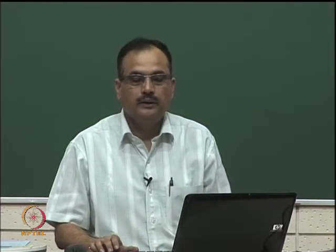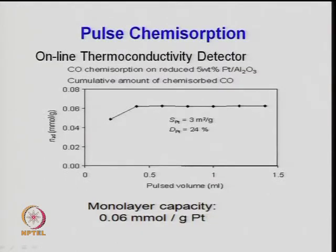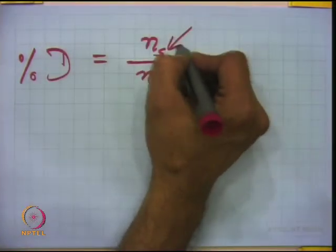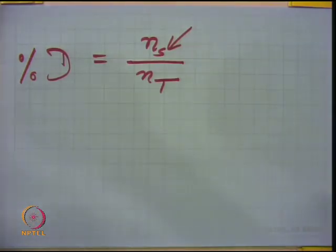Good morning. Last time we were talking about the dispersion, or chemisorption technique for determination of the number of surface metal or active metals which are necessary for the catalytic reaction. Dispersion is simply the number of metals available on the surface divided by the total number of metal atoms, which may be determined from atomic absorption spectroscopy or ICP or some other technique. This is determined by a titration method which is chemisorption.